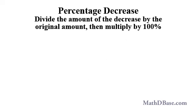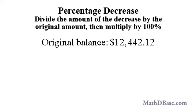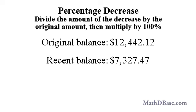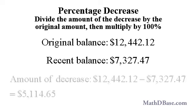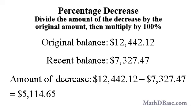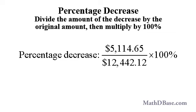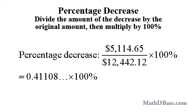To find a percentage decrease of a number, divide the amount of the decrease by the original amount, then multiply by 100%. On March 1, 2011, Josh's savings account balance was $12,442.12. On March 1, 2012, his account balance was $7,327.47. How much was the percentage decrease? The decrease in the balance was $12,442.12 minus $7,327.47, or $5,114.65. The percentage decrease was $5,114.65 over $12,442.12 times 100%, or about 0.41107 times 100%, or 41%, rounded to the nearest whole number.